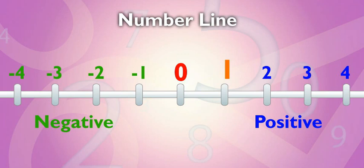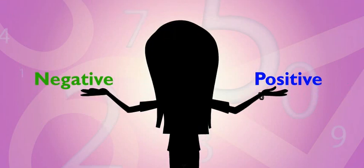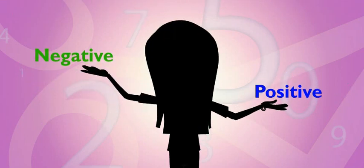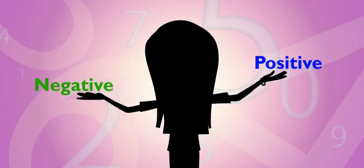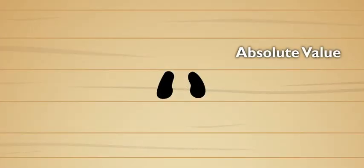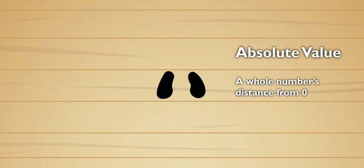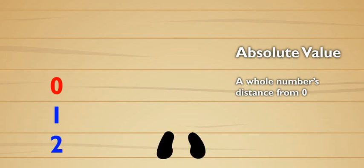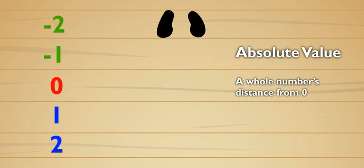Every positive number has an opposite negative number. Opposite numbers have the same absolute value. But that makes no sense. How can a negative number have the same value as a positive number? Well, absolute value is just a number's distance from zero, whether it's negative or positive. Think about it this way. Let's say that where you're standing is zero. If you take two steps forward, it's two steps. If you take two steps backward, it's still two steps, even though it's backward or negative. Oh, that makes sense.